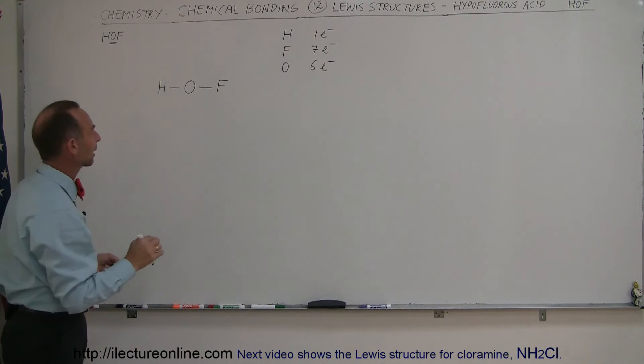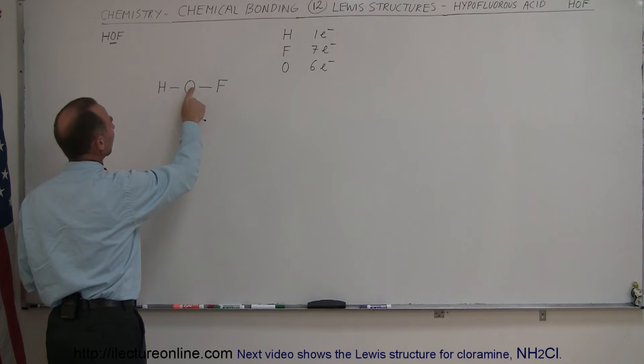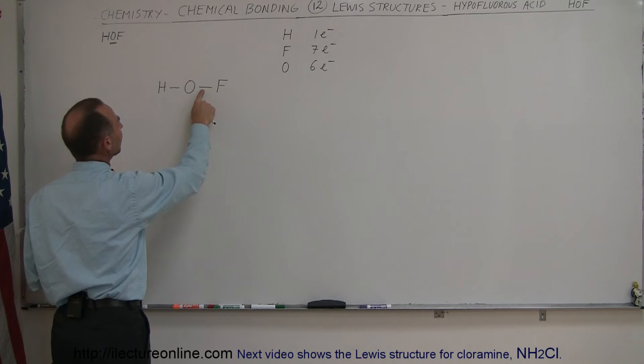Now let's draw in the remainder of the electrons. So two electrons are already used here in the bonding, which means there's only four more left for oxygen. So we'll put two there and two there.